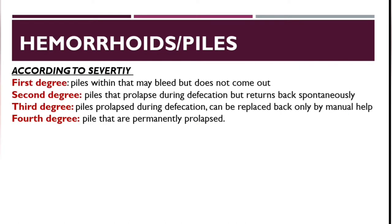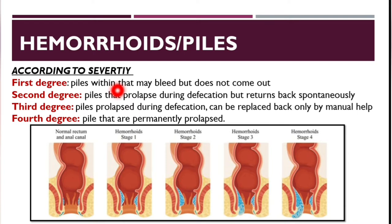According to severity, hemorrhoids are classified into four degrees. First degree: piles that may bleed but do not prolapse at all. Second degree: piles that prolapse during defecation but return spontaneously. Third degree: piles that prolapse during defecation and can only be replaced manually. Fourth degree: piles that are permanently prolapsed.